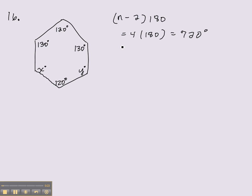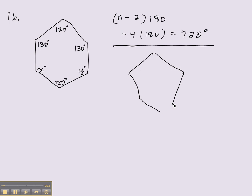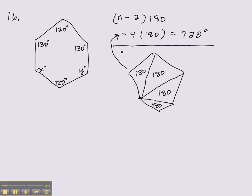So the sum of these 6 angles should be 720 degrees. If you forget the formula, don't worry — you can always find it another way. Just pick one vertex and start forming triangles from that one vertex. We see that we have 4 triangles, each 180 degrees, so the sum of the angles has to be 720 degrees.